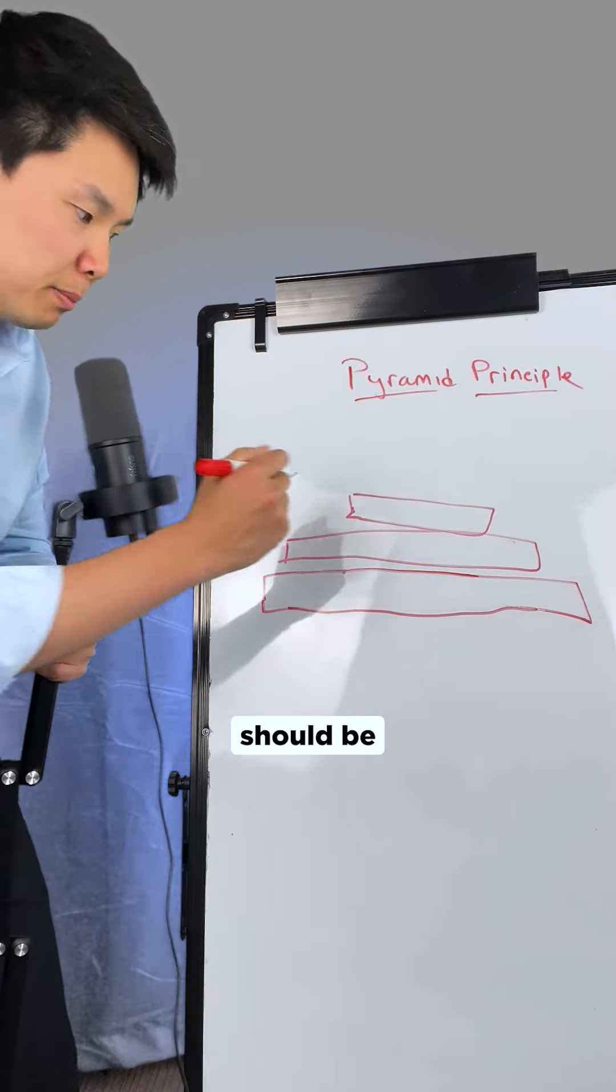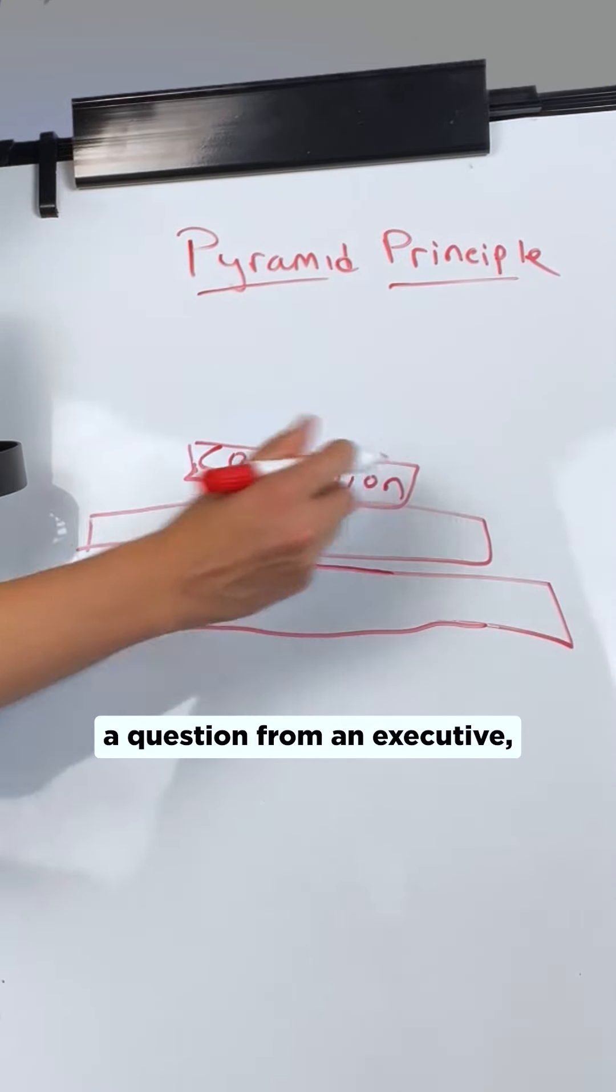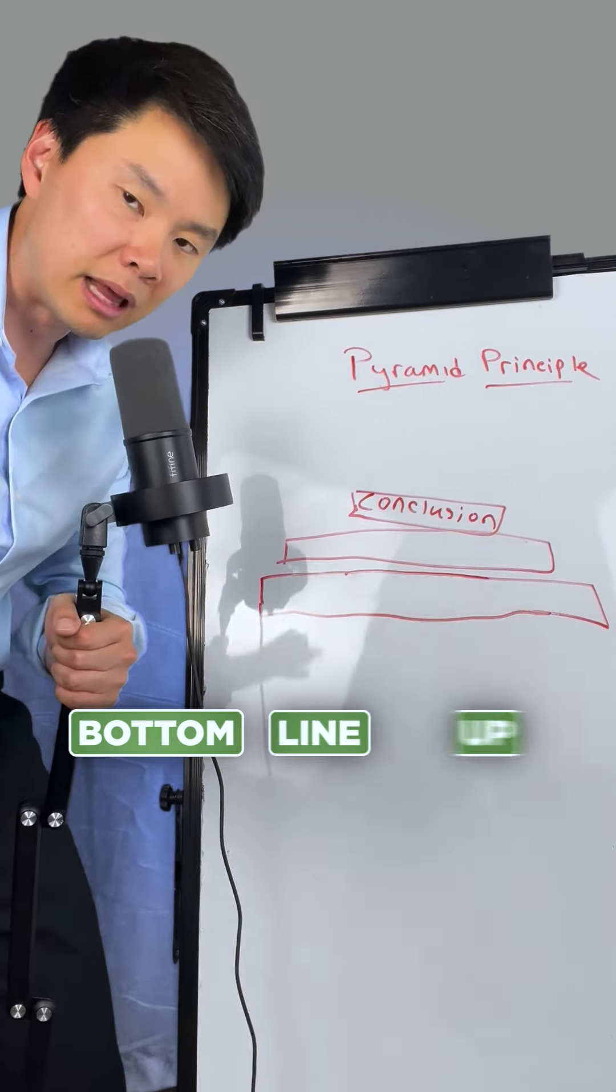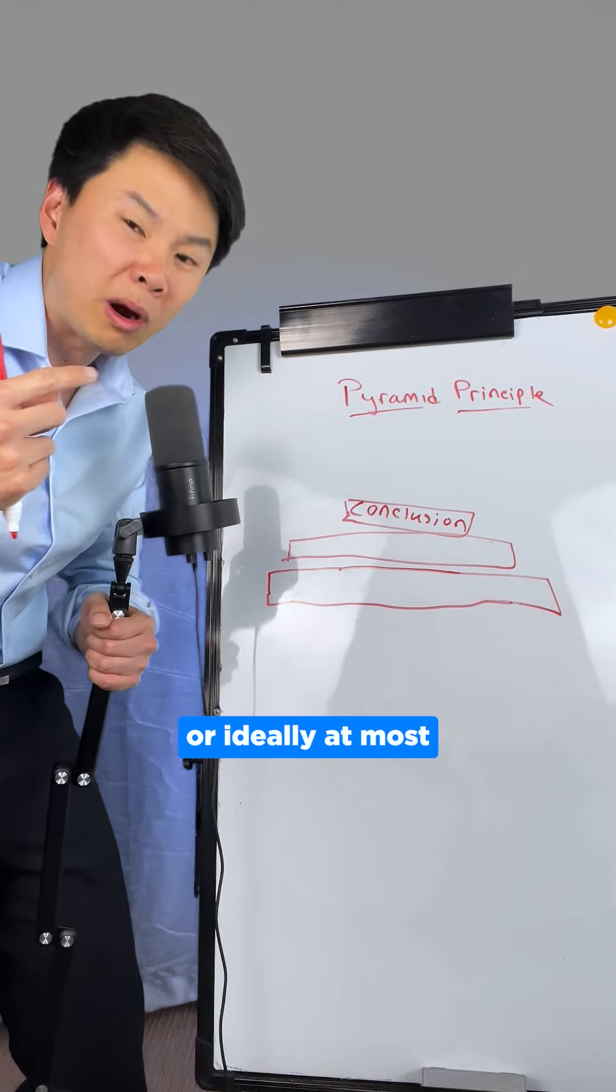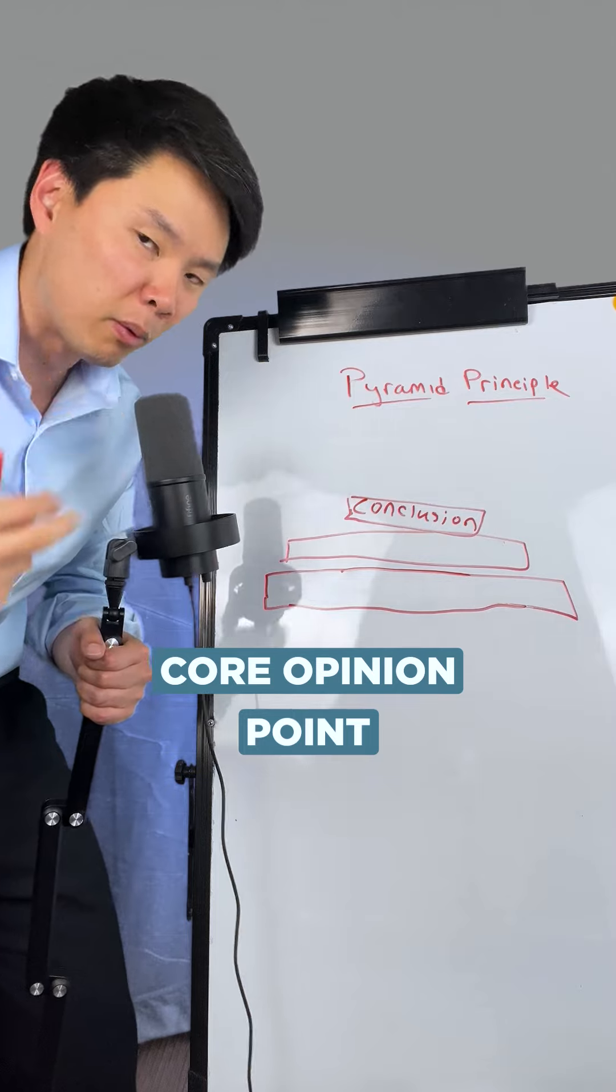Your first sentence should be your conclusion. Whenever you're asked a question from an executive, you need to give them the bottom line up front. It's a one or ideally at most two-sentence summary that encapsulates your core opinion or point.